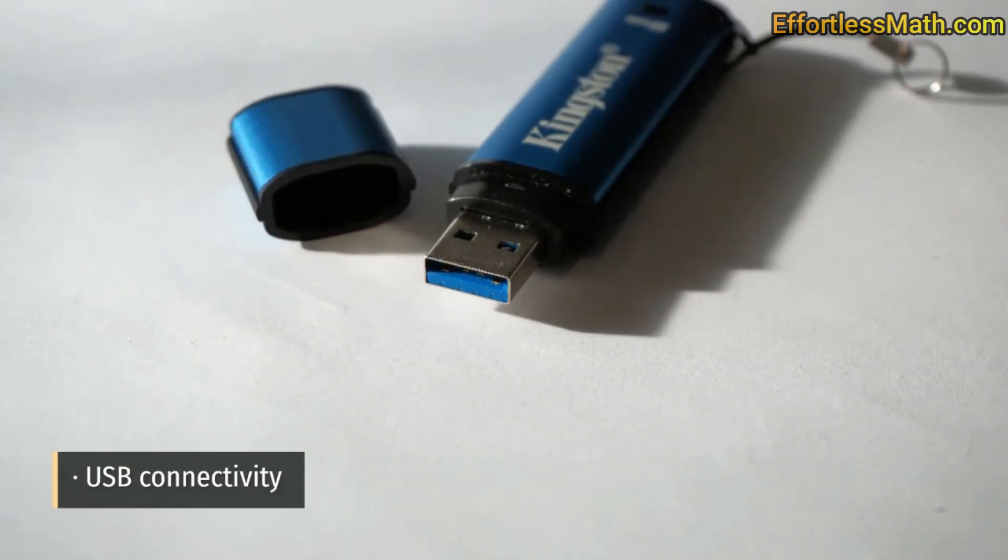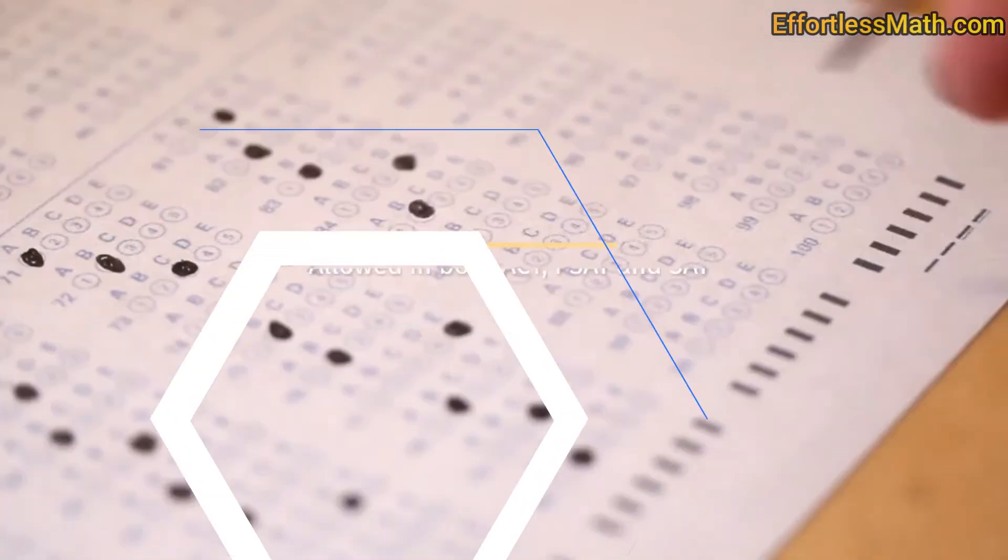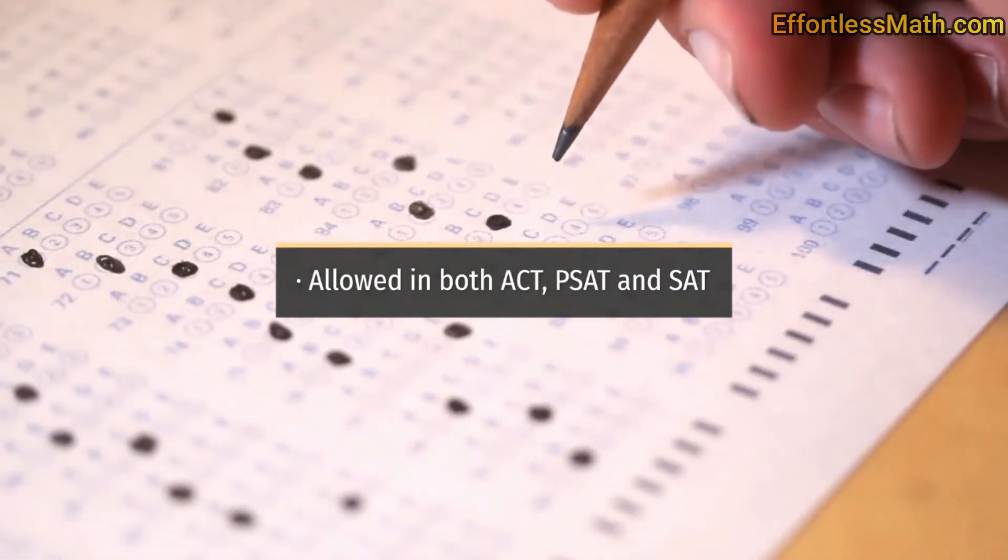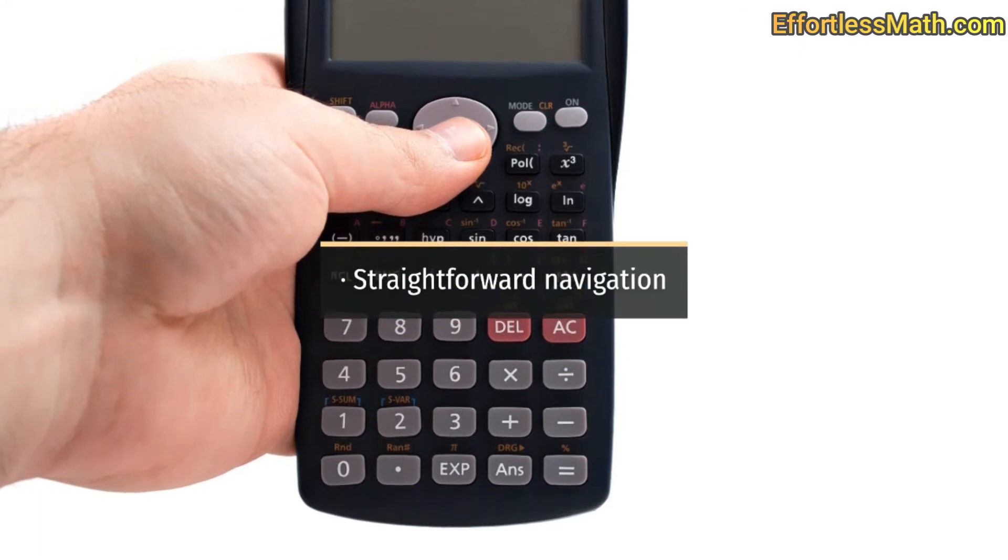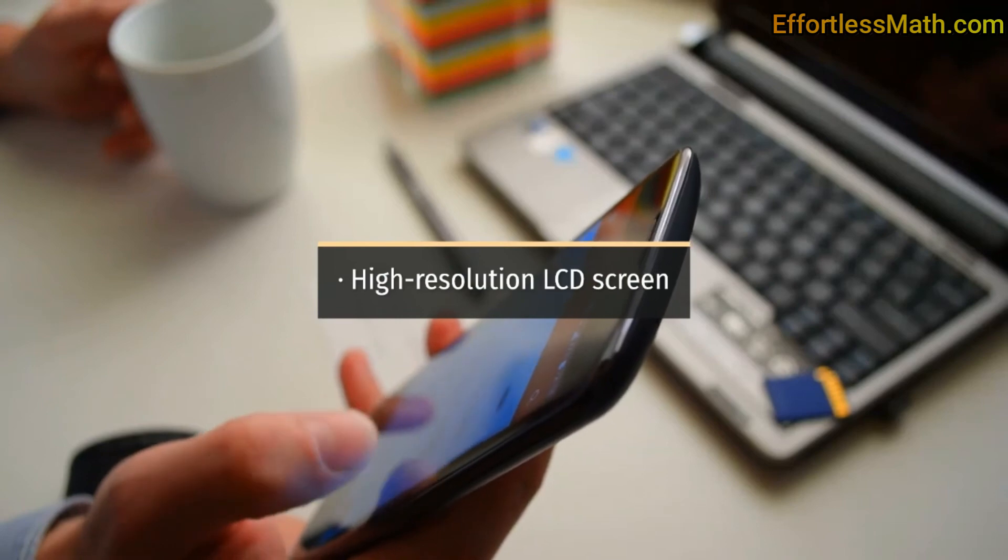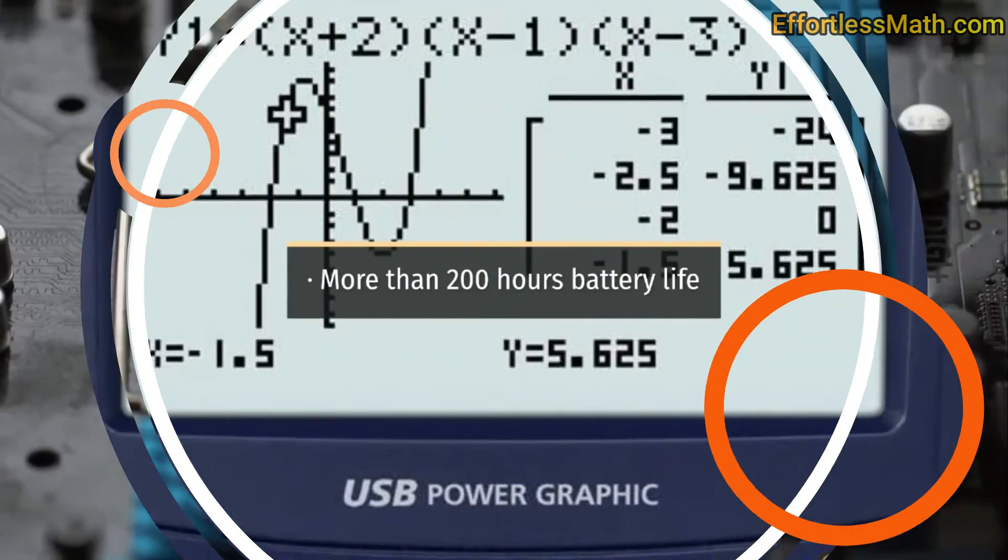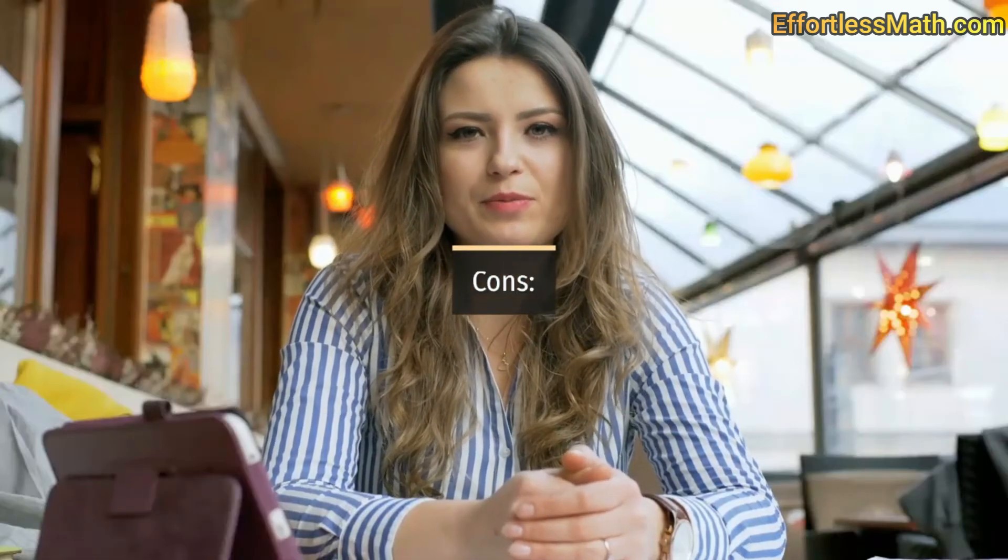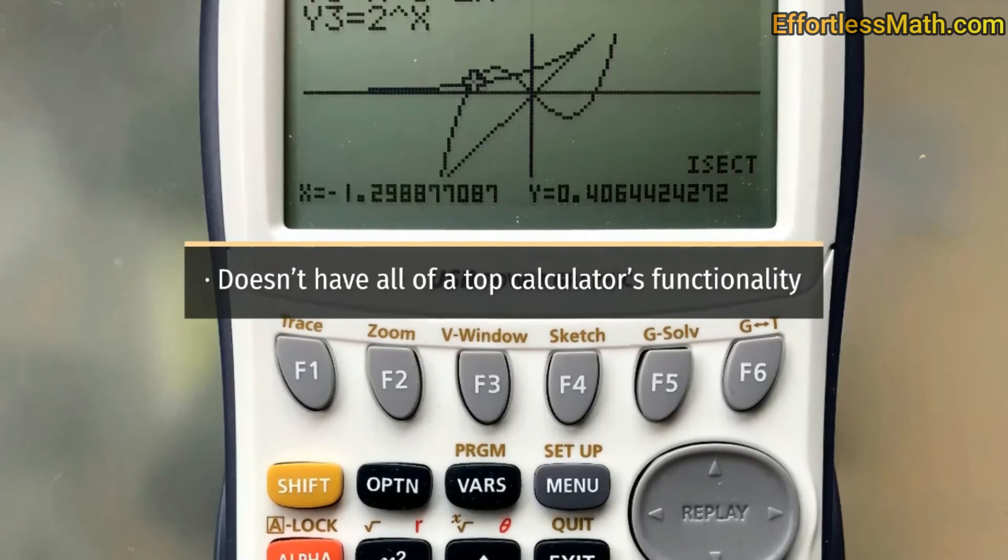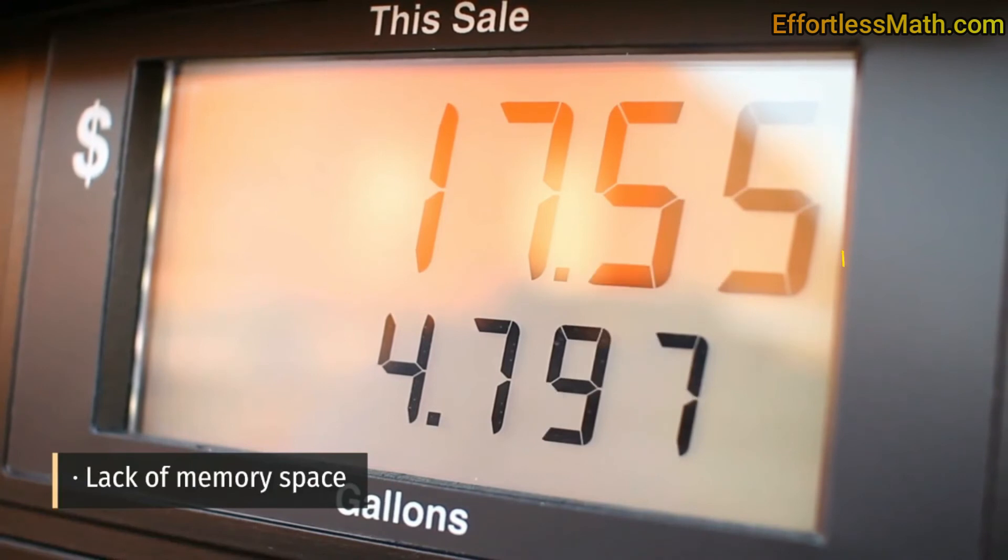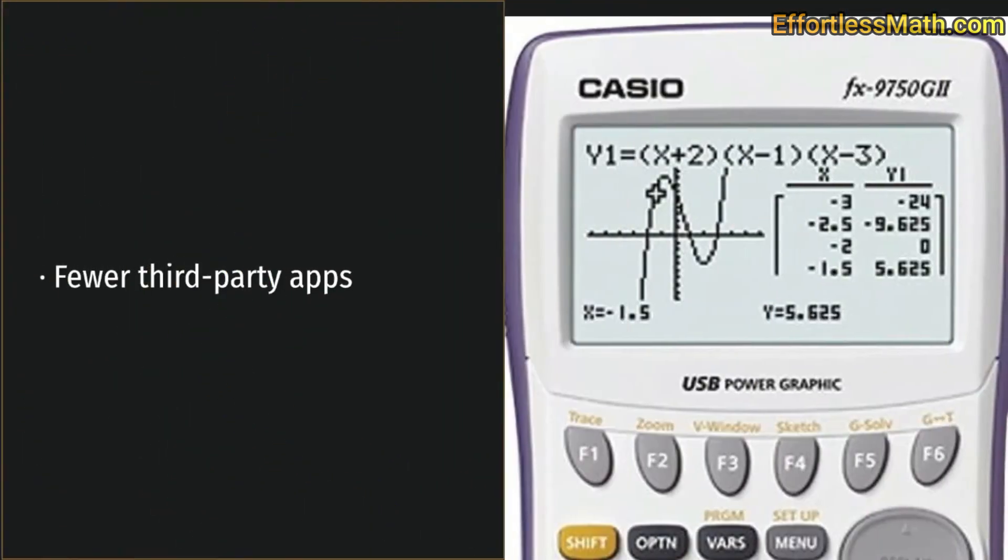Pros: USB connectivity, allowed in both ACT, PSAT, and SAT, straightforward navigation, high resolution LCD screen, high speed CPU, more than 200 hours battery life. Cons: doesn't have all of the top calculators' functionality, lack of memory space, fewer third party apps.